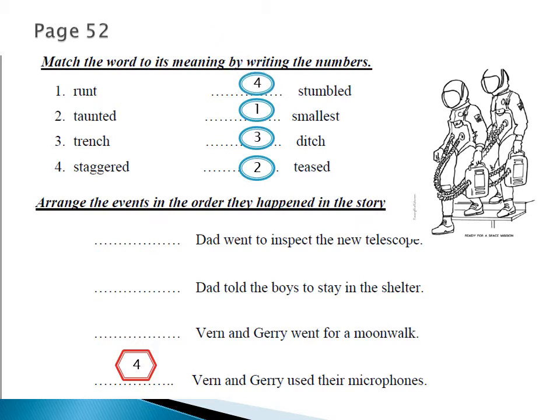Let's go to the next question: arrange the events in order as they occurred in the story. We have the first one and the last one. We have: dad went to inspect the new telescope, dad told the boys to stay in the shelter, Verne and Jerry went for a moonwalk, and Verne and Jerry used their microphones.